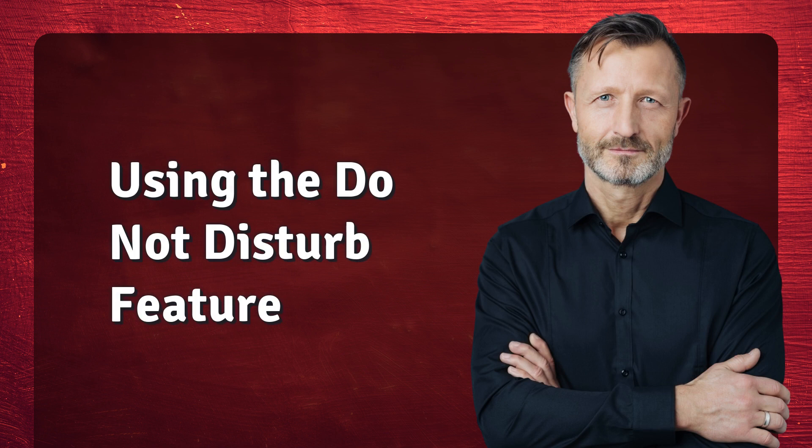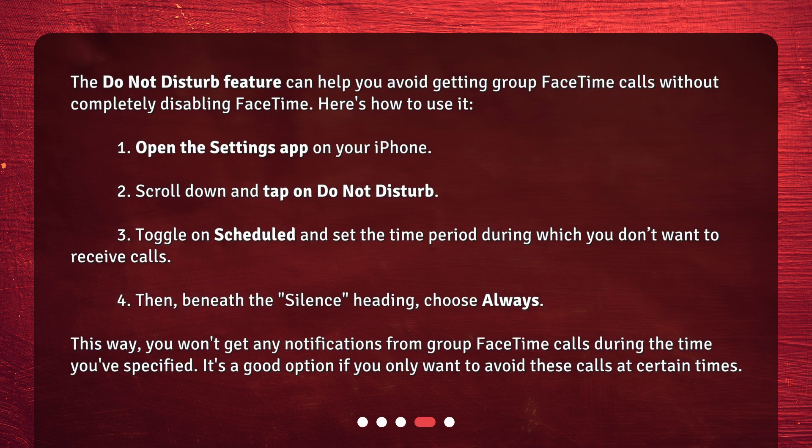The Do Not Disturb feature can help you avoid getting group FaceTime calls without completely disabling FaceTime. Here's how to use it: 1. Open the Settings app on your iPhone. 2. Scroll down and tap on Do Not Disturb. 3. Toggle on Scheduled and set the time period during which you don't want to receive calls. 4. Then, beneath the Silence heading, choose Always. This way, you won't get any notifications from group FaceTime calls during the time you've specified. It's a good option if you only want to avoid these calls at certain times.